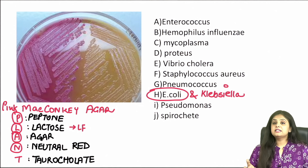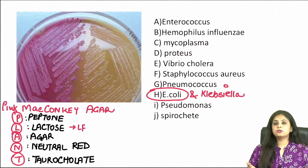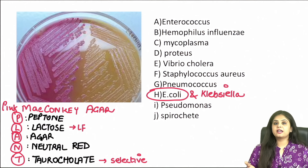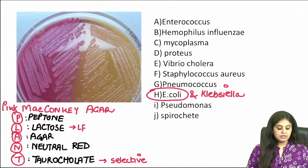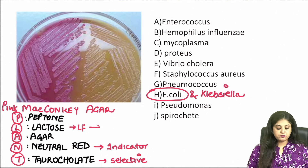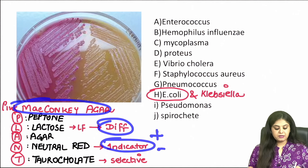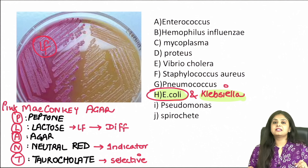What is the indicator? The color is changing, so there must be an indicator — which is neutral red — and the bile salts composition present is taurocholate. Bile salts make the medium selective; they will not allow all other organisms to grow, only a limited gram-negative Enterobacteriaceae family. Neutral red gives an indication of color change, making this an indicator medium. Lactose fermentation versus no lactose fermentation makes it a differential medium — so MacConkey is a differential plus indicator plus selective media, matched with E. coli.